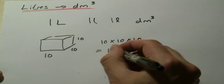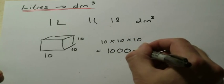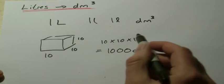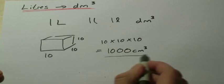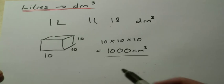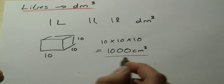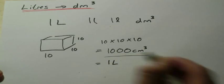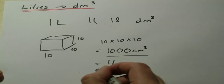10 times 10 is 100, 10 times 100 is a thousand. So 10 times 10 times 10—10 cubed or a decimeter cubed—is 1000 centimeters cubed. In other words, one liter is the same as 1000 centimeters cubed, which is the same as one decimeter cubed.